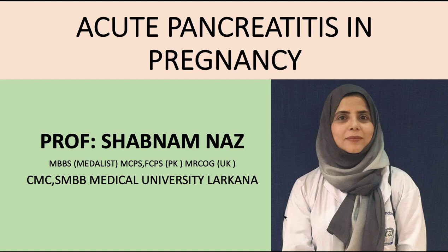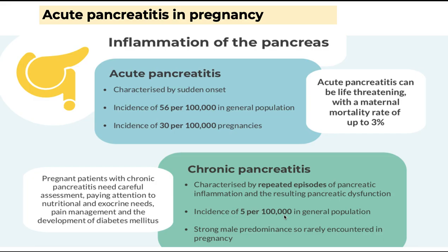Today I am going to deliver a lecture on acute pancreatitis in pregnancy. Acute pancreatitis is the inflammation of the pancreas. There are two types: acute and chronic pancreatitis. Acute pancreatitis is characterized by sudden onset; its incidence is 56 per 100,000 in the general population, while its incidence in pregnancy is 30 per 100,000 pregnancies.